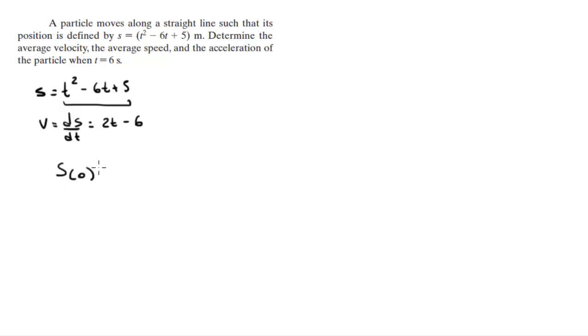So when t equals 0, you plug in 0 for the t and you get that the position is 5. And when t equals 6, you get that 6 squared minus 6 times 6 is 0, and again this is 5.